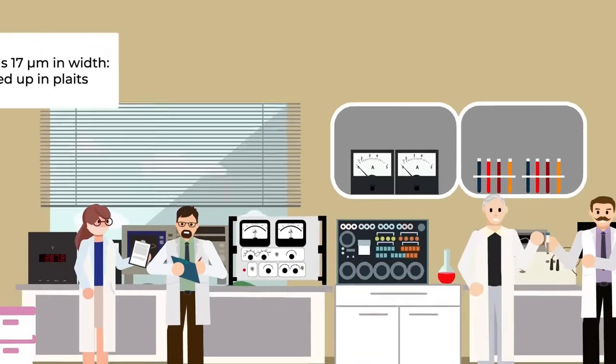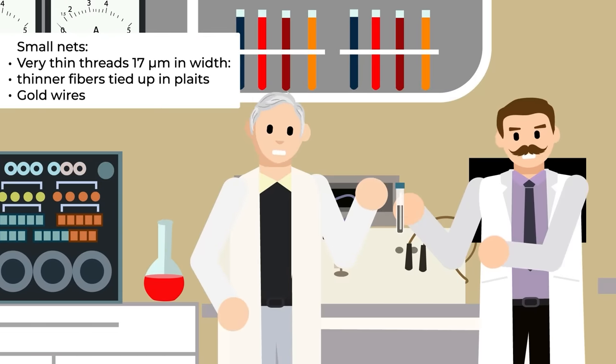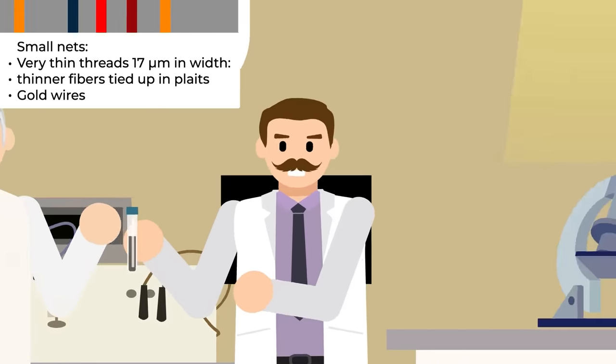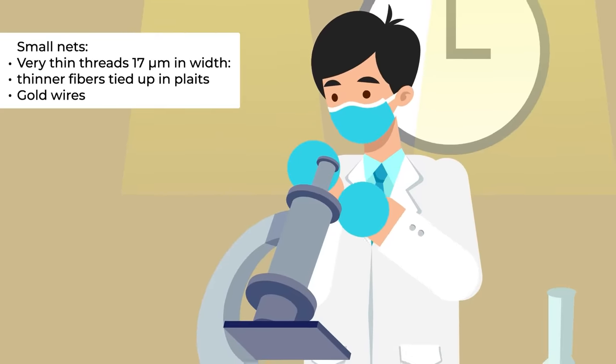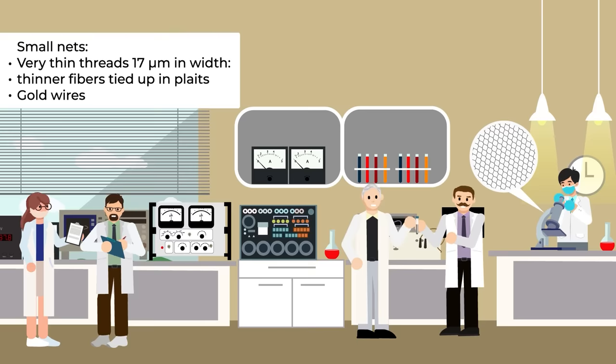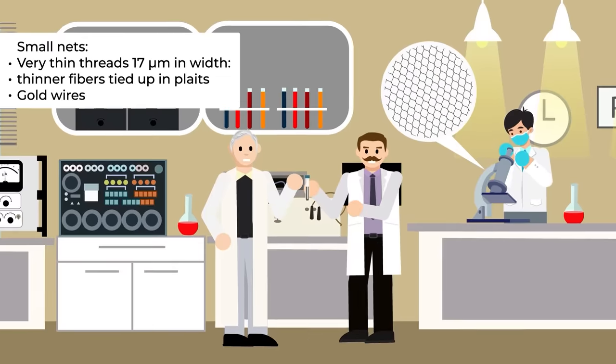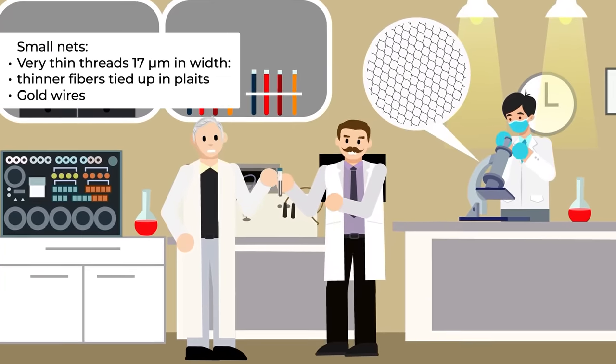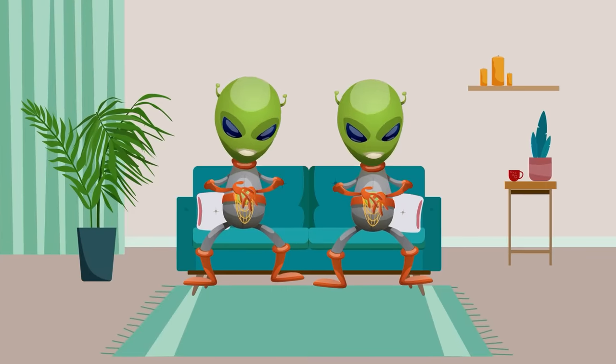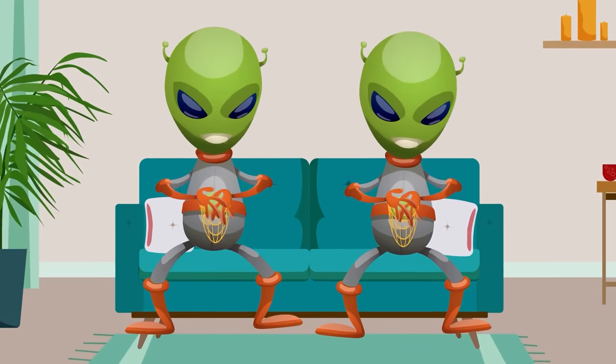The physical remains were examined at the Olmsk branch of the Academy of Sciences, who made a shocking discovery. Some of the fragments had formed into what appeared to be small nets, and when these were put under examination, it was discovered that they were made up of torn and very thin threads 17 micrometers in width. Each thread consisted of even thinner fibers tied up in plates, and intertwined with the fibers were thin, solid gold wires. The technology to replicate this type of delicate nanoconstruction wouldn't appear on Earth for decades, at least not in human hands anyway.